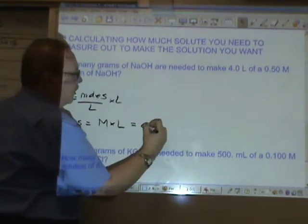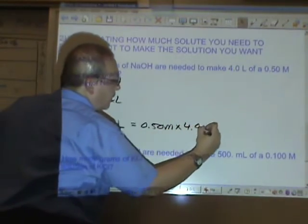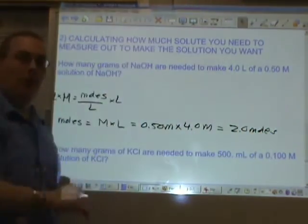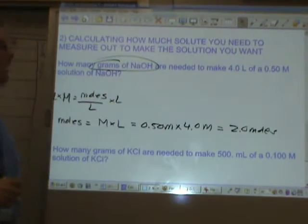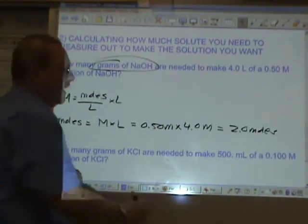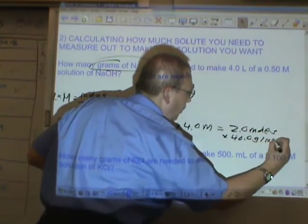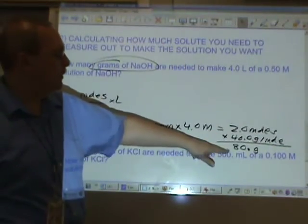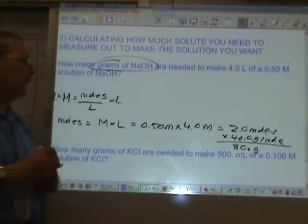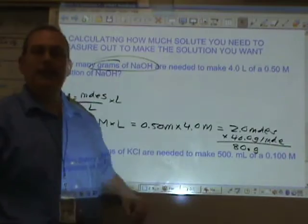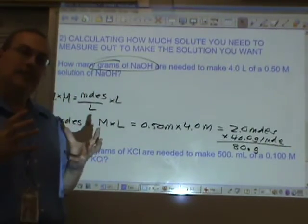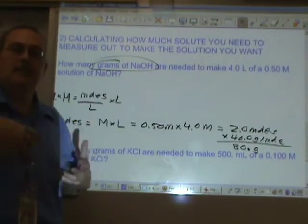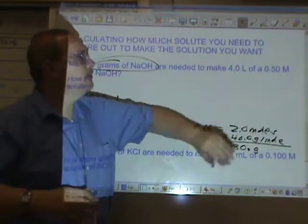The molarity is 0.50 molar times the liters is 4.0. 0.5 times 4 is 2.0 moles. But we're not done. Because this says how many grams of NaOH. How do you convert moles to grams? Multiply by formula mass. Times 40.0 grams for each mole means we need to weigh out 80 grams. Two sig figs, three sig figs, two sig figs in the answer. What this means is we have to find a 4 liter container, and in that 4 liter container, we need to put 80 grams of sodium hydroxide. And then, we fill it up with water and we shake it until it's completely dissolved. Then, we'll have our 4 liters of our 0.5 molar solution.